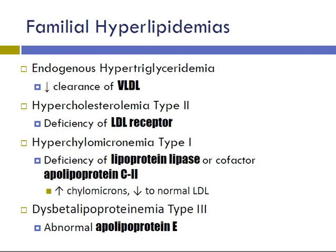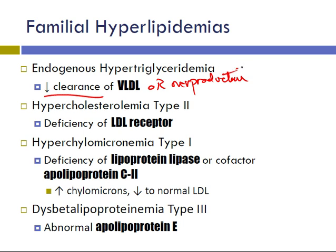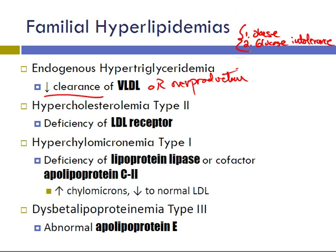Now the hyperlipidemias. Starting with endogenous hypertriglyceridemia: you have endogenous overproduction of too many triglycerides in the blood, caused by overproduction or reduced clearance of VLDL. Patients with this disorder will be obese and have glucose intolerance — think metabolic syndrome. The high-yield point is the problem is with VLDL.